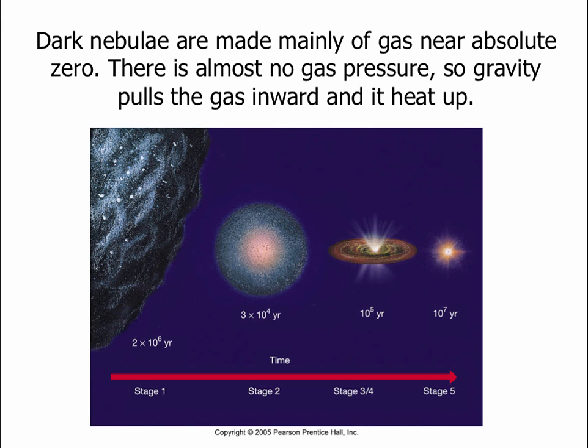Back in the last lecture, we talked about dark nebulae — dark nebulae are made of cold gas, so cold that it's transparent, but also with dust grains that don't allow visible light through. Dark nebulae are made primarily of gas, and this gas is so cold that there's virtually no gas pressure. This gas is maybe 10 or 20 degrees above absolute zero, with virtually no gas pressure. So gravity can begin to pull the gas inward, and as you squeeze gas, the temperature goes up.